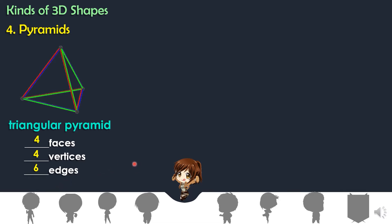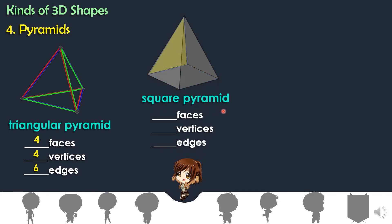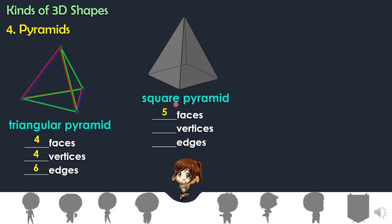The next kind of pyramid is the square pyramid. It is called square pyramid because the base is a square. Let us count the faces: one, two, three, four, five. The square pyramid has five faces.